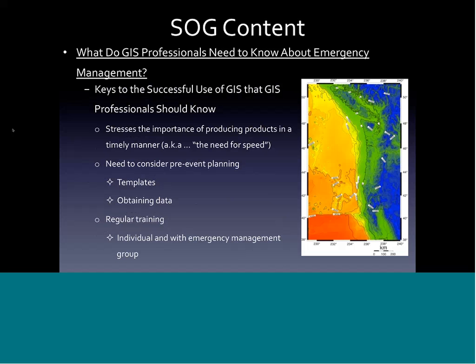GIS professionals need to understand that emergency response is really time sensitive — they need to understand the need for speed. Be prepared with pre-incident established products, understand the coastal oil spill response timeline, and set up templates. Talk to your emergency management team and understand what they're looking for. The more prepared you are, the more opportunity you'll have to do additional GIS analysis beyond the base maps needed at the beginning of an event. GIS professionals should be incorporated into pre-incident training — it creates more of a one-team mentality.